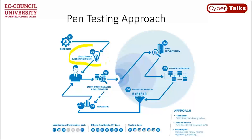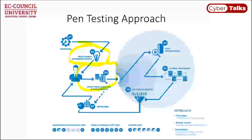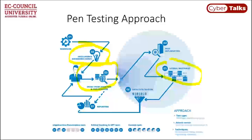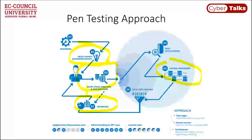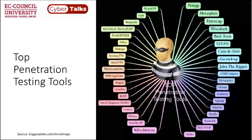The stages of pen testing include intelligence gathering — often using open-source intelligence platforms — identifying entry points to the network, exploitation by compromising systems with scripts and malware, initiating lateral movement, performing data exfiltration, and finally providing a detailed report with recommendations on how to fix issues and block vulnerabilities. This is the generic model of penetration testing.